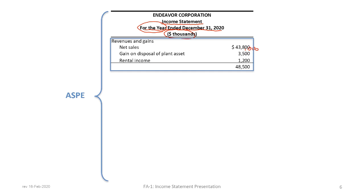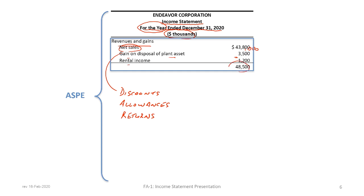All revenues and gains are presented first, with sales reported on a net basis — net of any sales discounts, allowances, or sales returns. We will see these disclosed separately on a multi-step statement, but on a single-step income statement they are netted out and only reported as net sales. Our example also includes a gain on disposal of a plant asset of $3,500,000 and rental income of $1,200,000, giving total revenues and gains of $48,500,000.